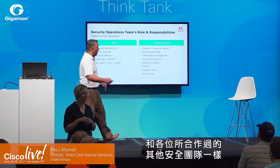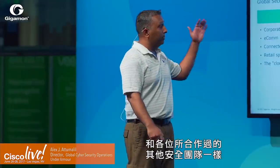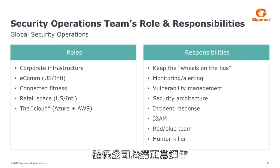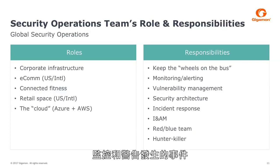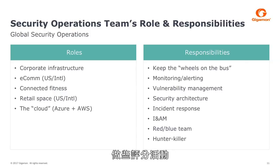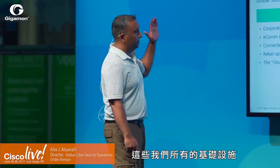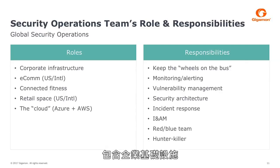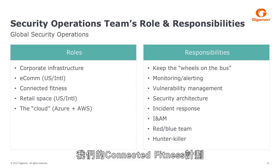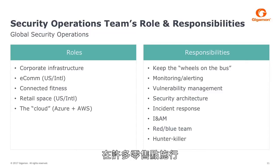As with every other security team, the team is responsible for top to bottom — keeping the wheels on the bus, making sure operations go smoothly, monitoring and alerting on events, triaging and incident response, as well as doing red-blue activities and hunting for events in the environment — not just strictly looking for alerts that pop up. And that work spans all of their infrastructure: corporate, e-commerce, the Connected Fitness platform, retail space, and now heavily into the cloud.